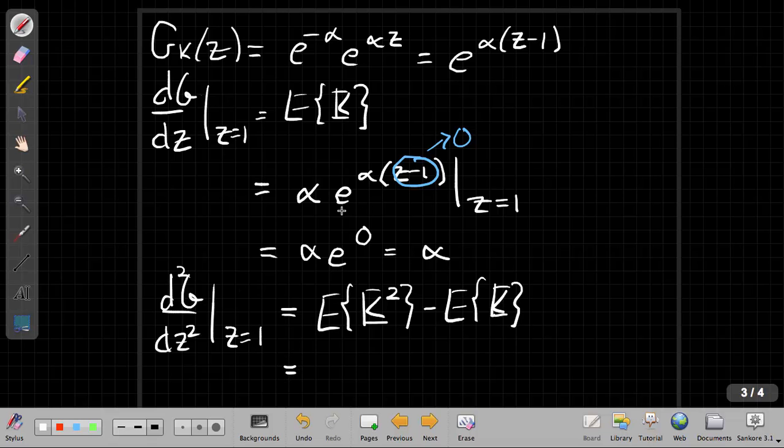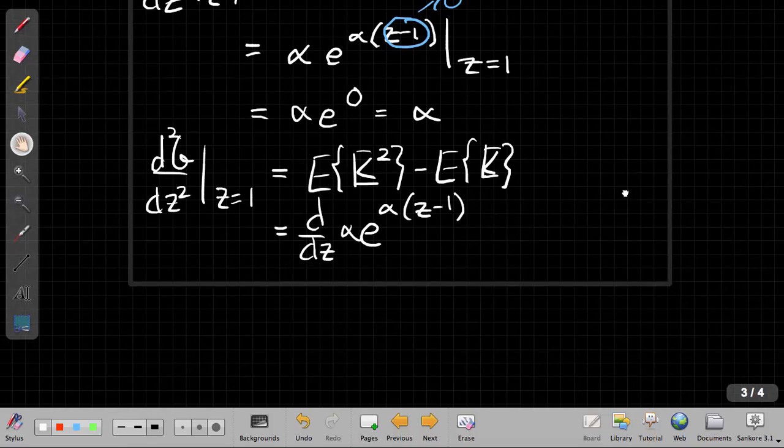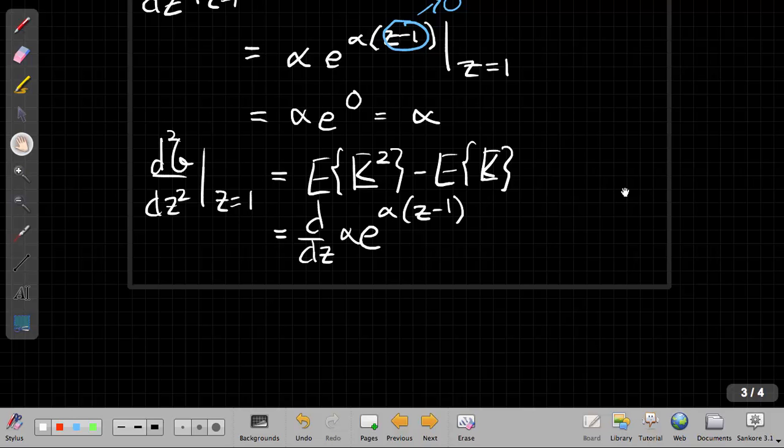So if I take the second derivative of what I have up here, the second derivative means I'm going to take d/dz of alpha times e to the alpha z minus 1. And so when I take another derivative, well, this part again still remains the same. I have e to the alpha z minus 1. This becomes alpha squared.